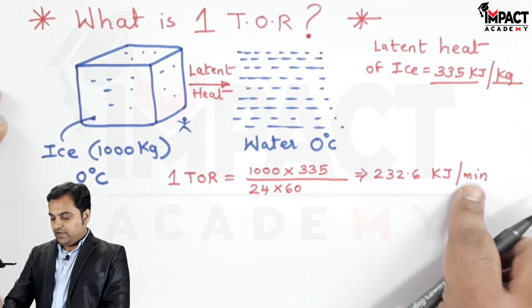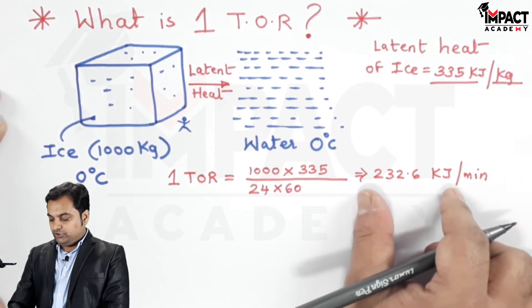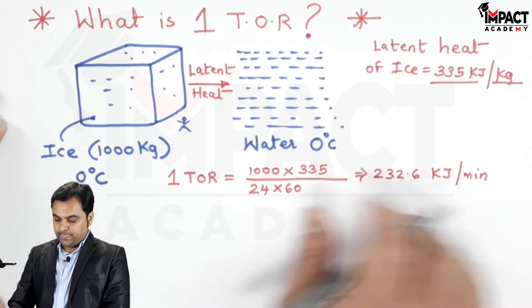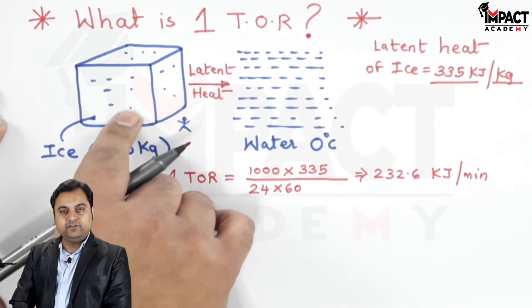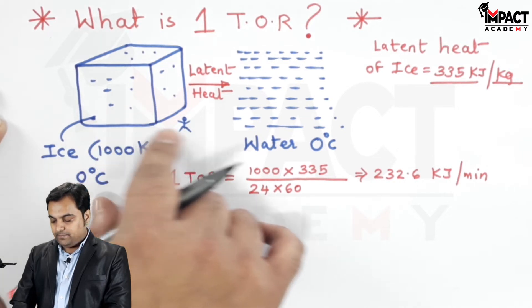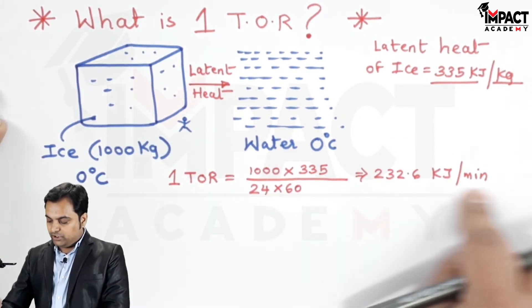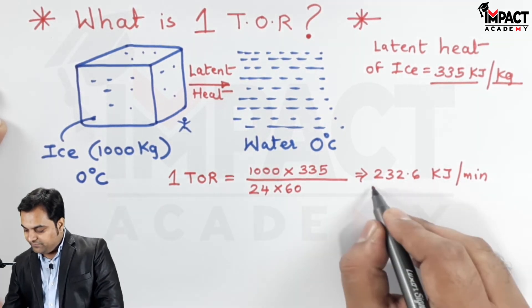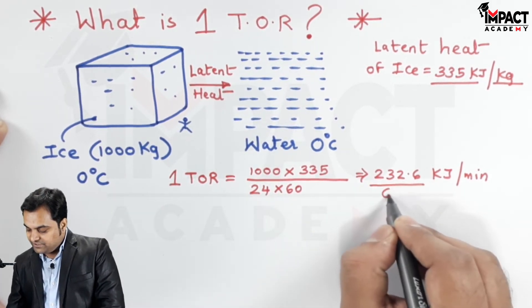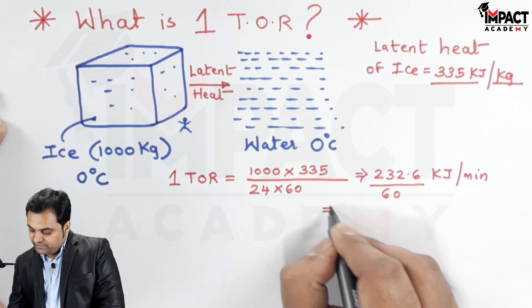It means in one minute 232.6 kilojoule heat is being given to the ice so that it melts and becomes water at 0 degree Celsius. Now to convert it into per second I would be dividing this by 60, so that gives me the answer as 3.876 kilojoule per second.